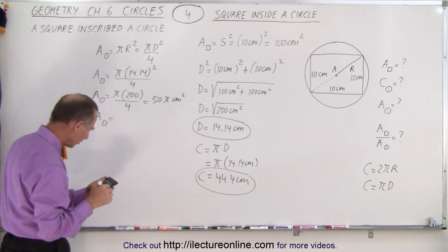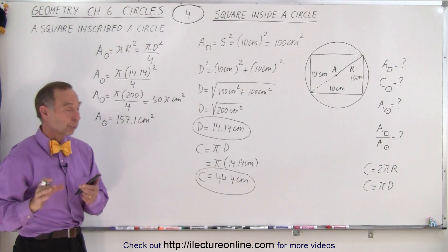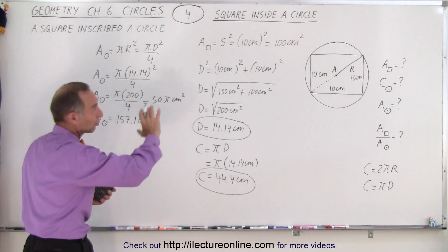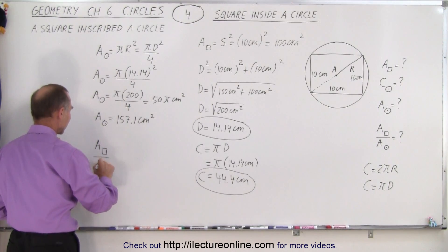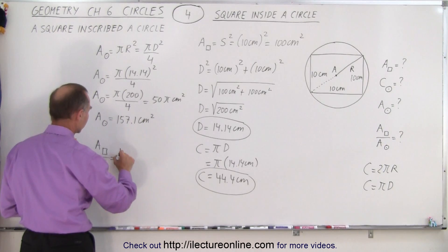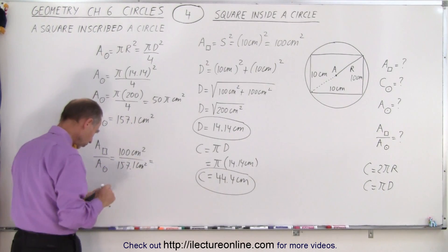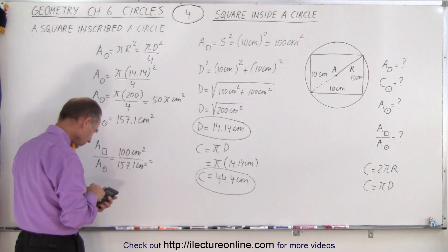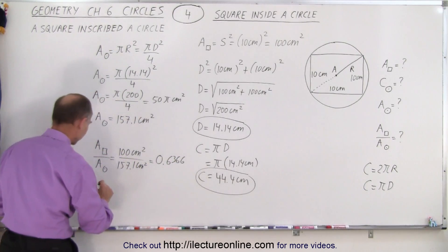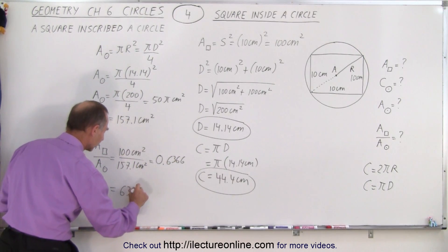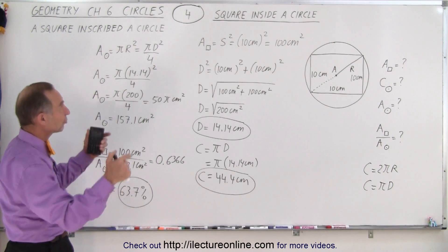The area of the circle is equal to 50π, which gives us 157.1 centimeters squared. Now if we want to know the ratio — what portion of the surface area of the circle does the square occupy — we take the area of the square divided by the area of the circle: 100 centimeters squared divided by 157.1 centimeters squared, which equals 0.6366, or 63.7 percent.